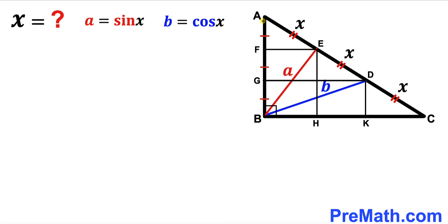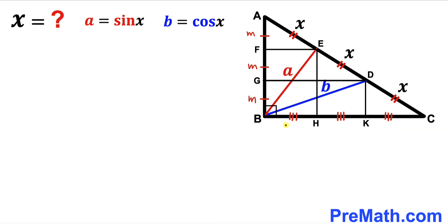Let's assume segment AF is lowercase m; then segment FG is also lowercase m, and likewise m. Similarly, segments BH, HK, and CK are going to be equal as well. If I label BH as lowercase n, then HK is lowercase n and CK is lowercase n as well. Bear in mind that all these angles are 90 degrees.